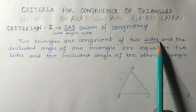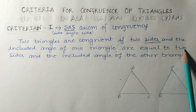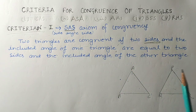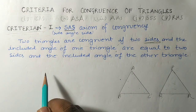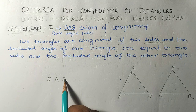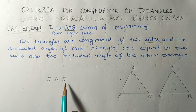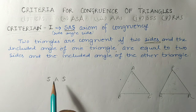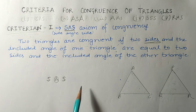The SAS criterion states: two triangles are congruent if two sides and the included angle of one triangle are equal to two sides and the included angle of the other triangle. The name 'Side-Angle-Side' is important — the angle is in the middle of the two sides, exactly as the name indicates.